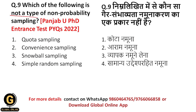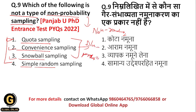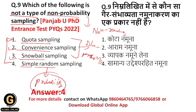Which of the following is not a type of non-probability sampling? Options: quota sampling, convenience sampling, snowball sampling, simple random sampling. In non-probability sampling, you collect samples non-randomly. Quota sampling, convenience sampling, and snowball sampling are all non-probability sampling techniques because in all three you select samples non-randomly. But simple random sampling is a probability sampling technique, because in it you randomly select samples. So the correct answer is option 4: simple random sampling is not a type of non-probability sampling.